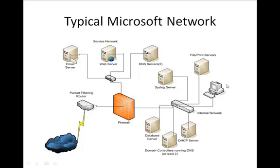Here's a slightly more complicated network diagram. We still have our packet filtering router, the internet, and our firewall with three interfaces. Out in the service network we have two DNS servers for our internet domain. If you register an internet domain, you have to give the registrar the IP address of two DNS servers that are authoritative for the domain you're registering — you have to do this.